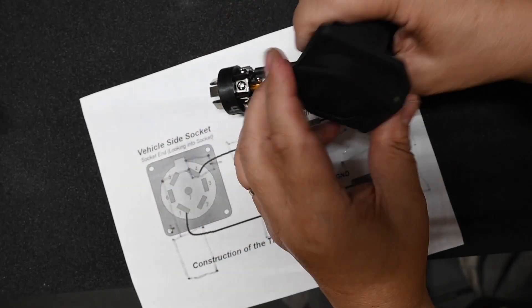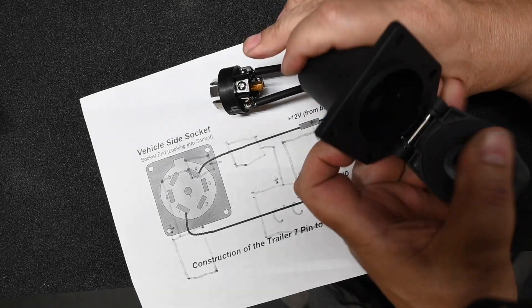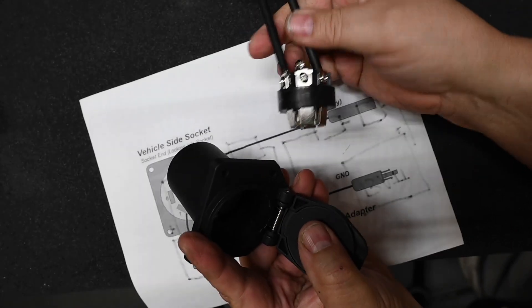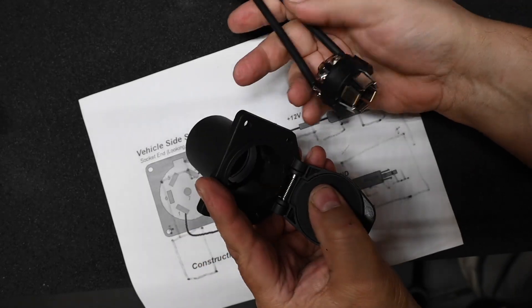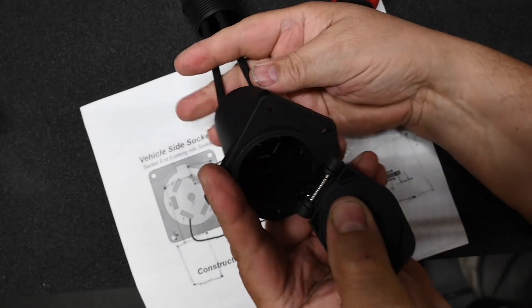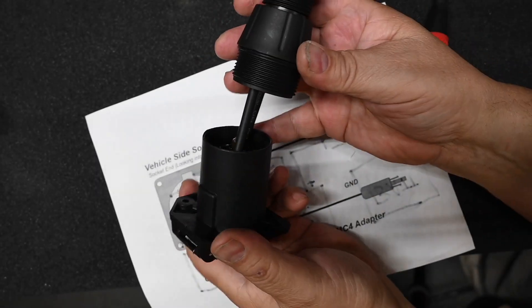And then when you put this back on, there's an orientation with three indents in here that sometimes is hard to figure out how to get back in. But if you look at it through the front, you probably can get it. And then once it's in,